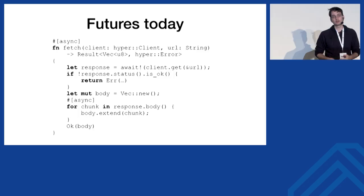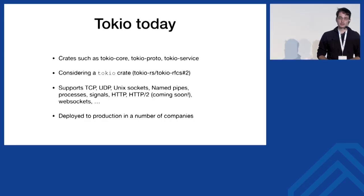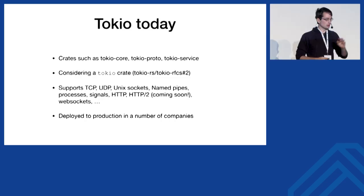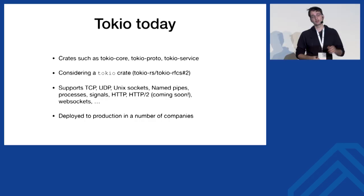The Tokyo crate gives you all the bare primitives you'd expect: TCP, UDP, named pipes, processes, signals, and protocols such as HTTP, HTTP/2, and WebSockets. You have a nice package to get up and running quickly, and we've seen this deployed in production at a number of companies.